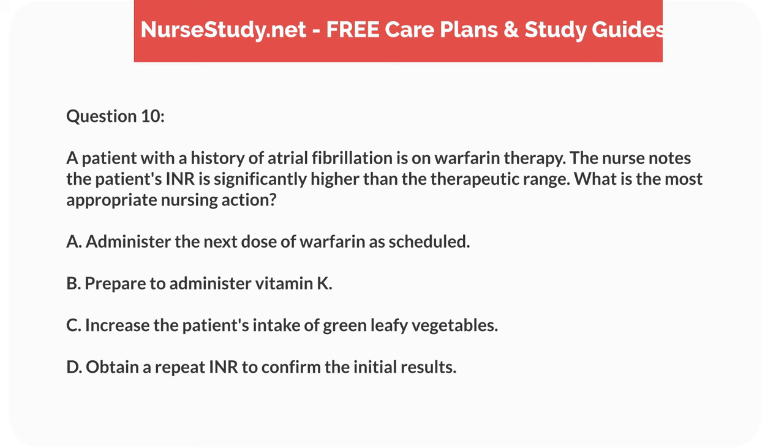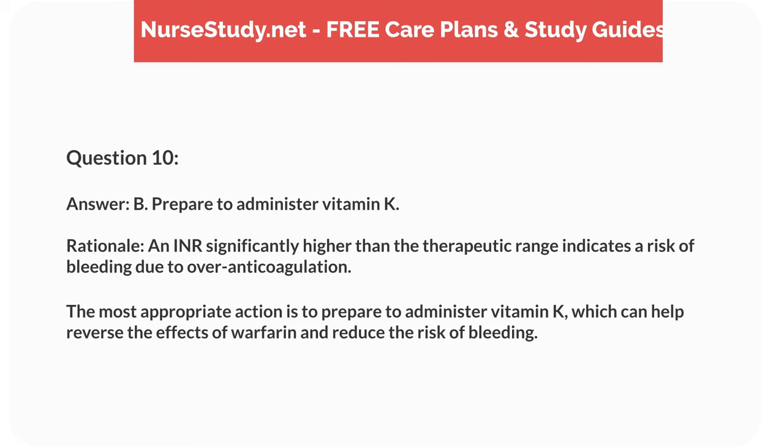Question 10. A patient with a history of atrial fibrillation is on warfarin therapy. The nurse notes the patient's INR is significantly higher than the therapeutic range. What is the most appropriate nursing action? A. Administer the next dose of warfarin as scheduled. B. Prepare to administer vitamin K. C. Increase the patient's intake of green leafy vegetables. D. Obtain a repeat INR to confirm the initial results. Answer: B. Prepare to administer vitamin K. Rationale: An INR significantly higher than the therapeutic range indicates a risk of bleeding due to over-anticoagulation. The most appropriate action is to prepare to administer vitamin K, which can help reverse the effects of warfarin and reduce the risk of bleeding.